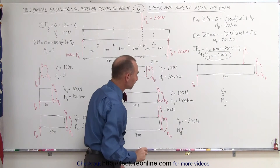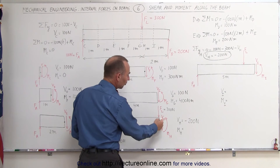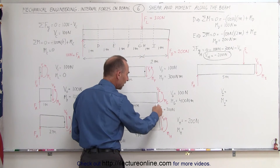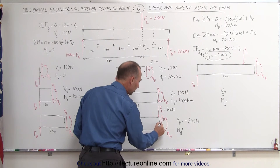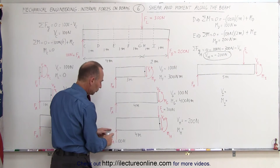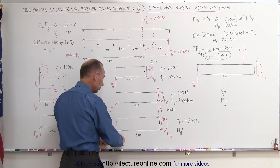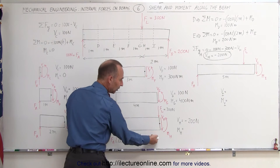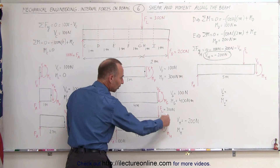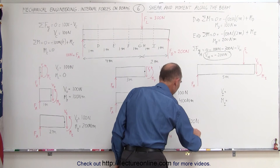For the moment at H, notice that the load force does not contribute to the moment here because it acts right at the pivot point. The only force adding to the moment is the reaction force at A, which is the same situation as before. We have 100 newtons times 4 meters, which is 400 newton meters. So the internal moment M sub H is counteracting that at 400 newton meters.